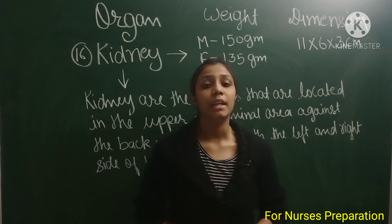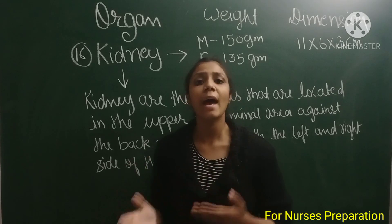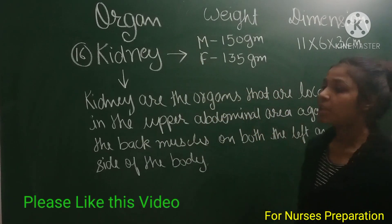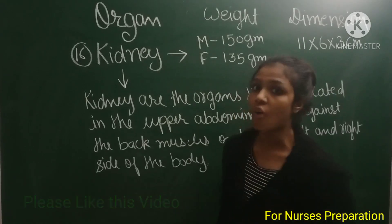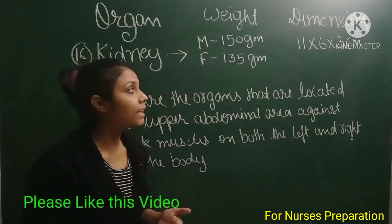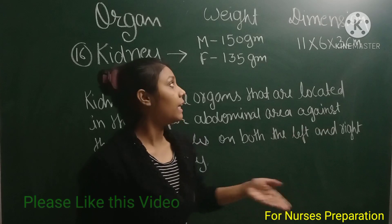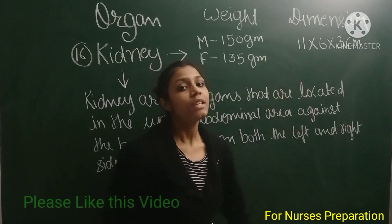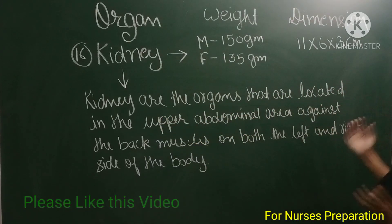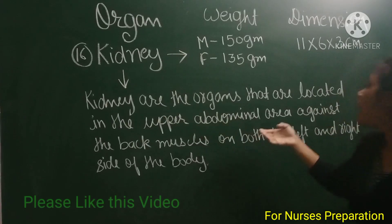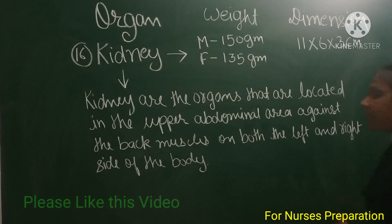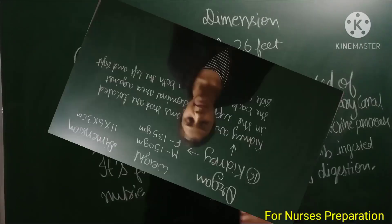Next organ is the kidney. Kidney weight varies between male and female: in males it consists of 150 grams, whereas in females it consists of 135 grams. The dimension of the kidney is 11 x 6 x 3 cm. The kidneys are located in the upper abdominal area against the back muscles on both the left and right sides of the body.